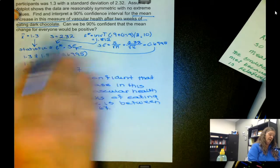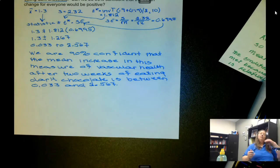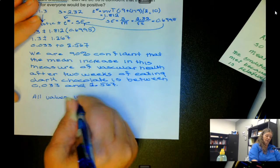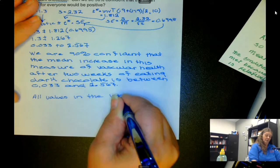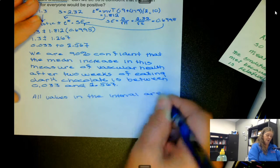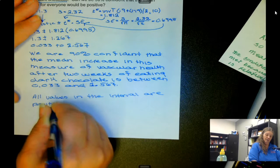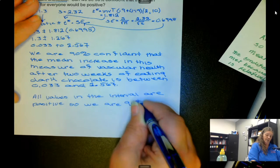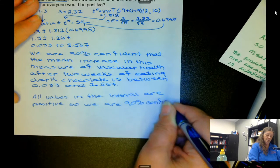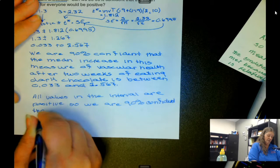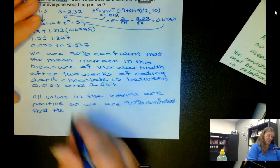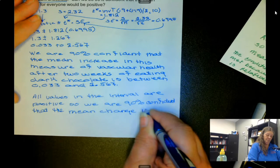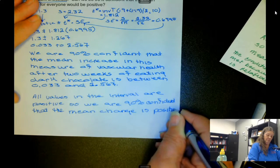We're not finished because there's another question here. It says can we be 90% confident that the mean change for everyone would be positive? Well if we look at this, all values in the interval are positive, so we are 90% confident that the mean change is positive.